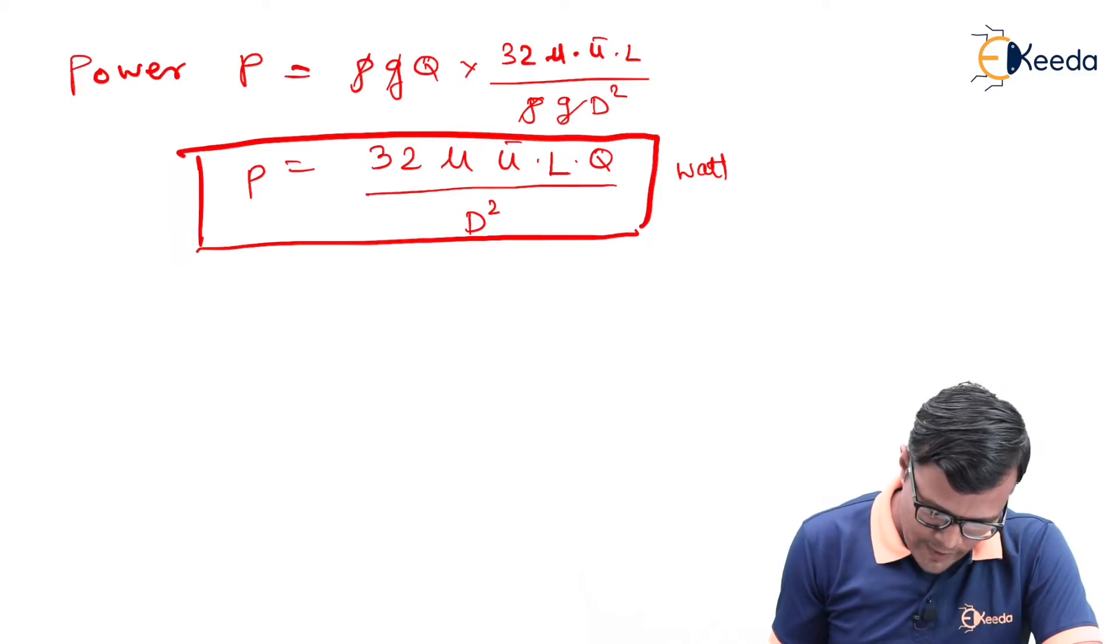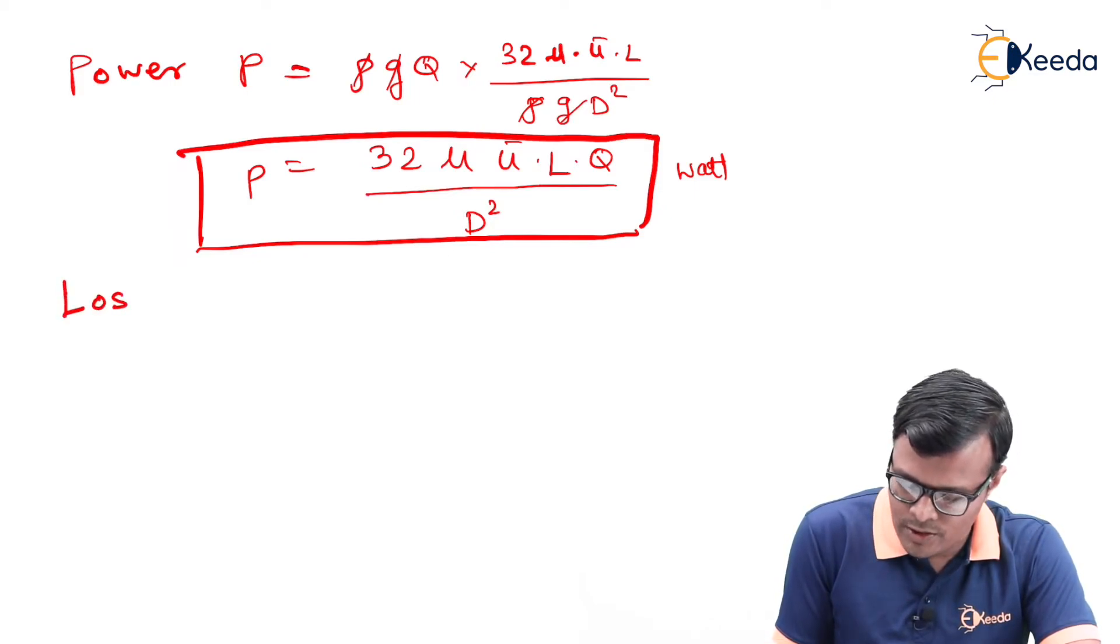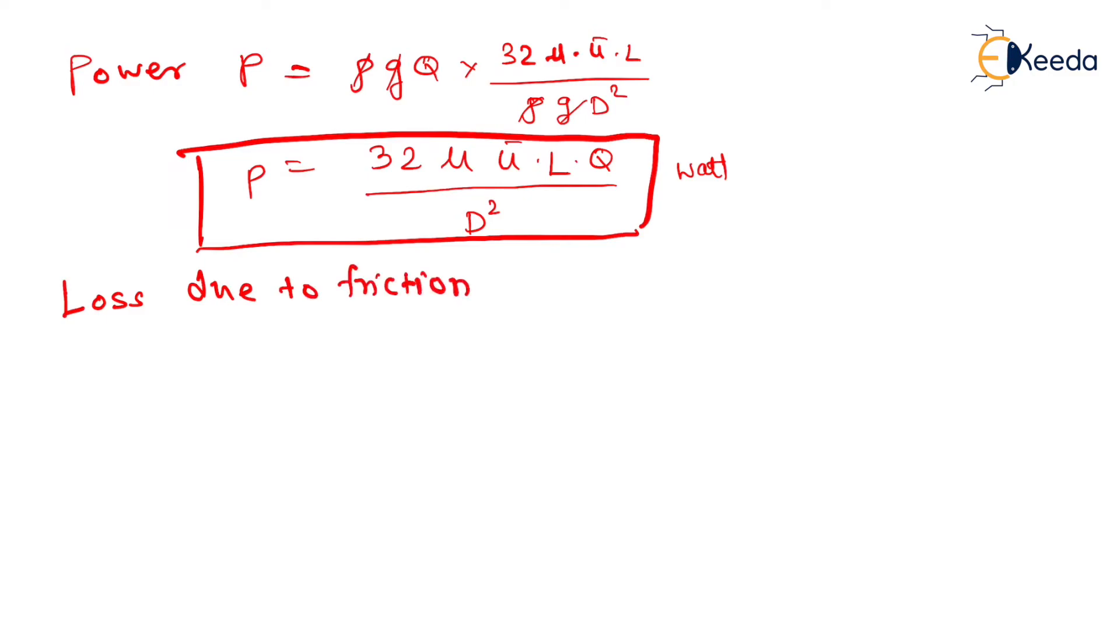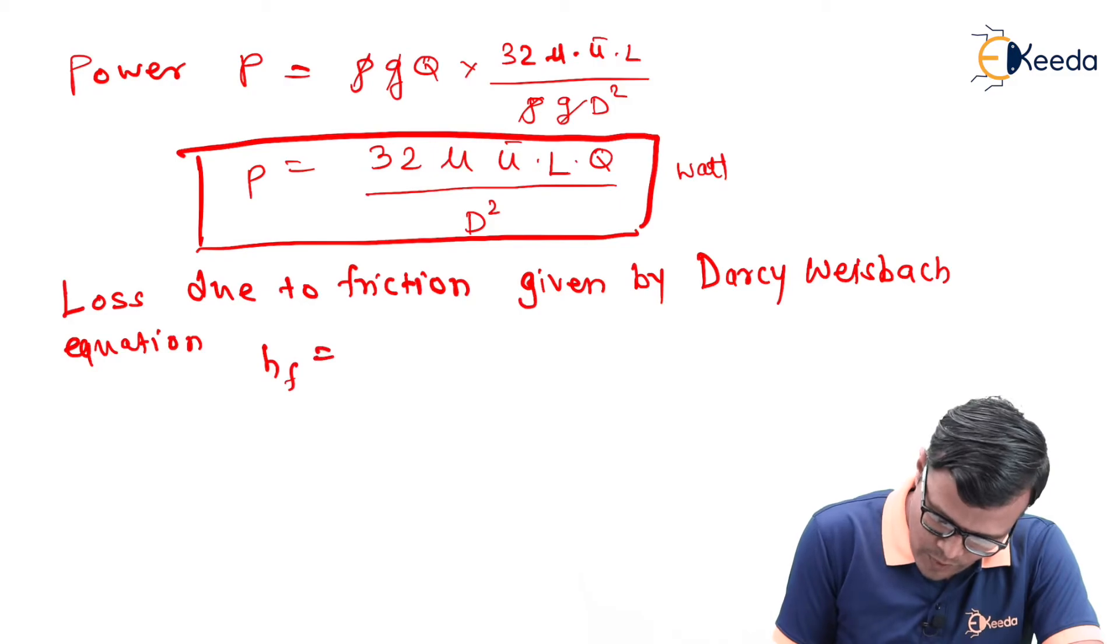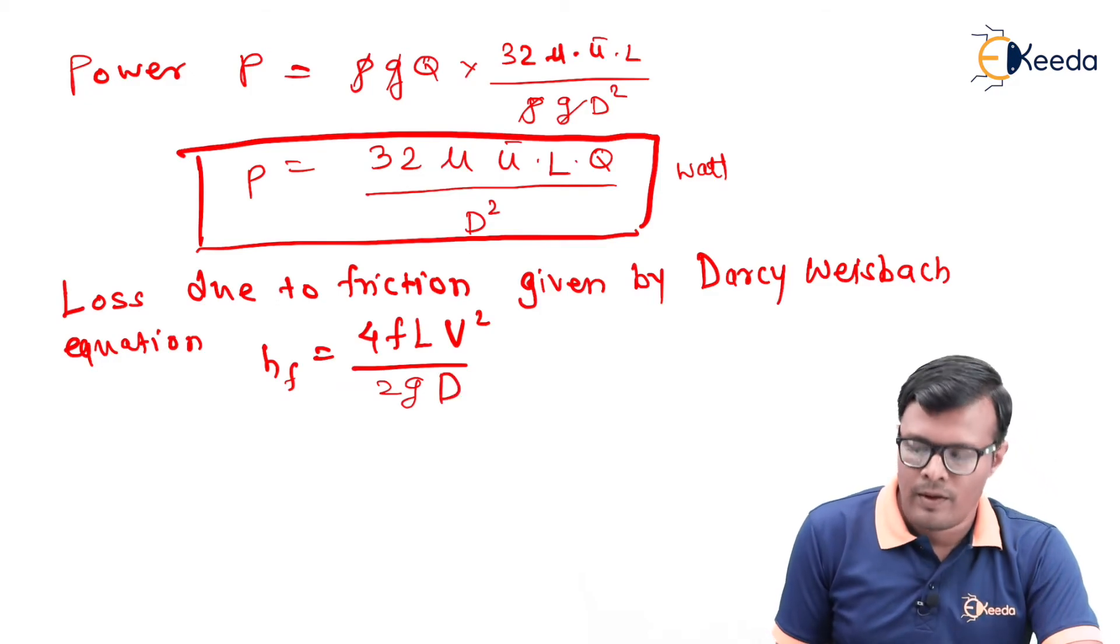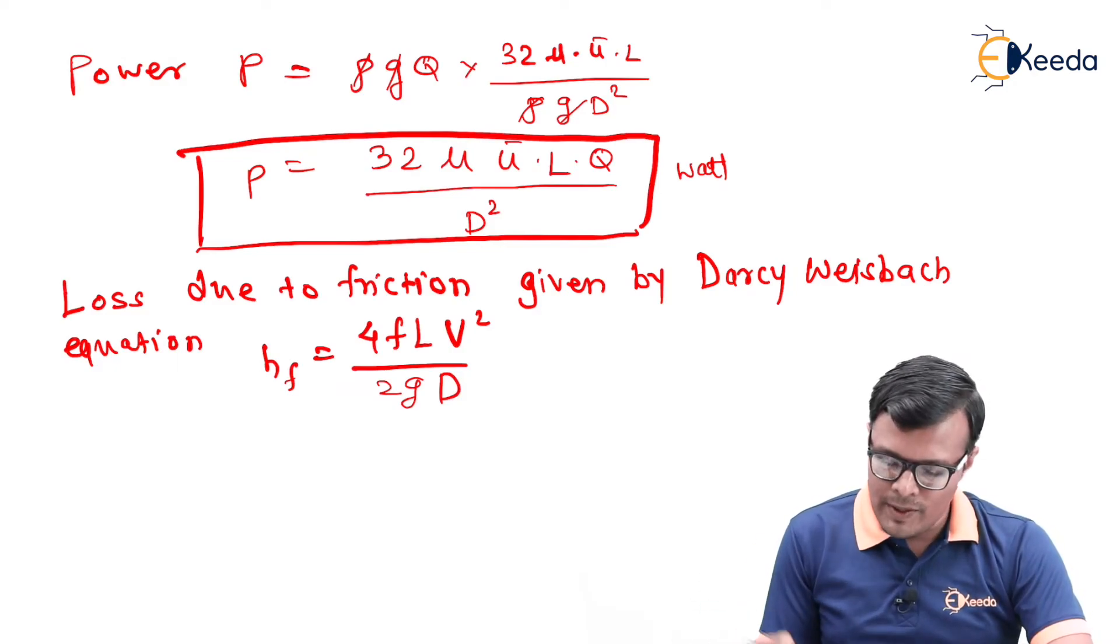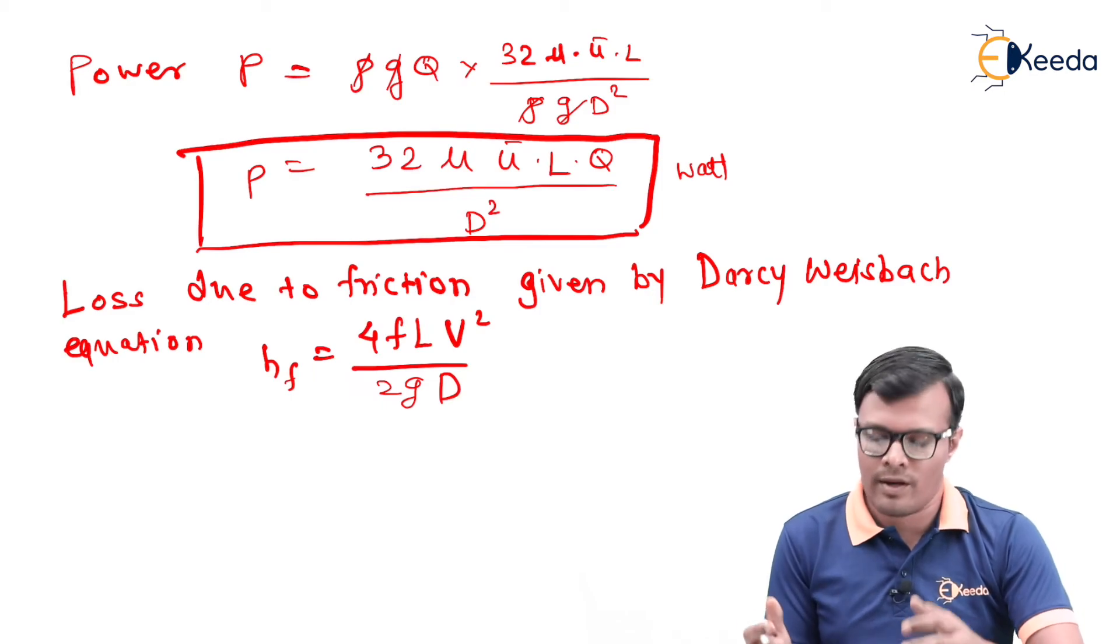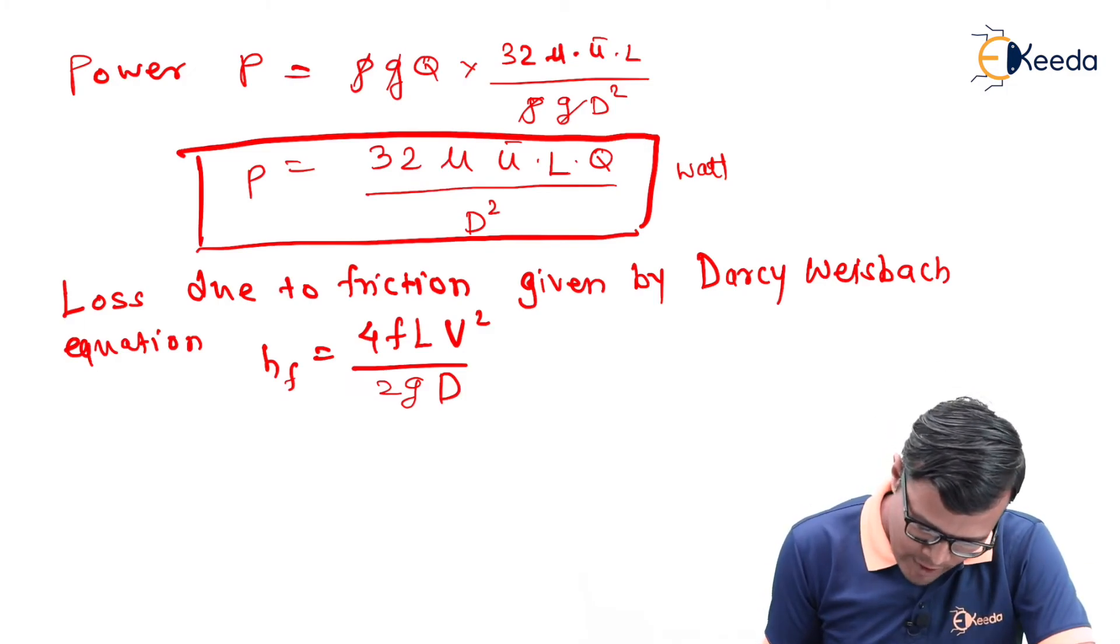Now we will start with the same concept of head loss but in case of friction. Loss due to friction given by Darcy-Weisbach equation, that we have already calculated, is equal to HF equals 4 f L v square upon 2 g d. Now it is clear that there are two relations of head loss, so we can equate them. But before that, we will consider some terms which were present in Darcy-Weisbach equation in terms of regular equation, that is Hagen-Poiseuille equation. Here this velocity in this formula is actually taken as average velocity.